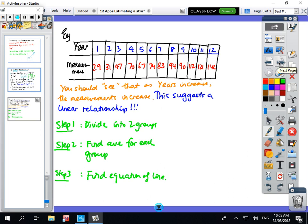Okay so I've got a set of data, years 1 to 12 and whatever we're measuring is there. So you can see as the years are going up, the data is trending upwards, so these measurements suggest a linear relationship.